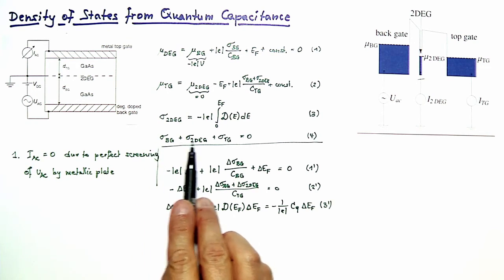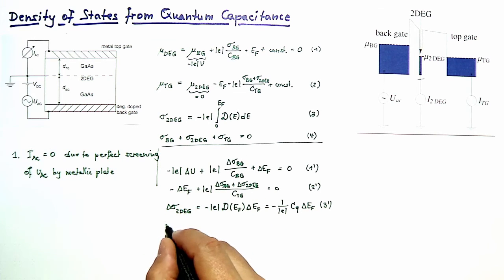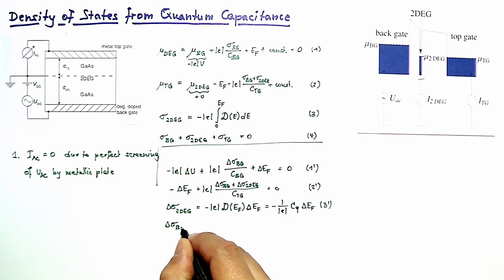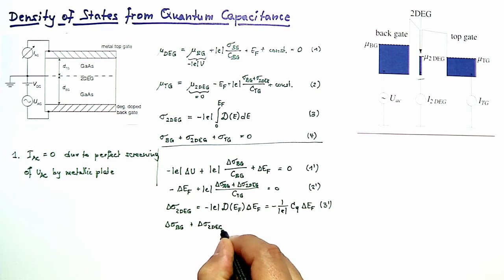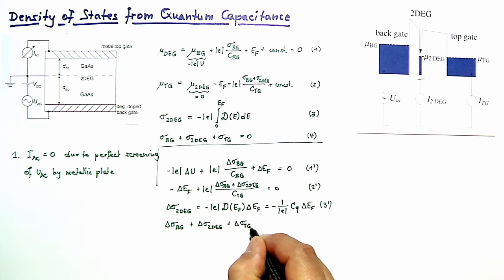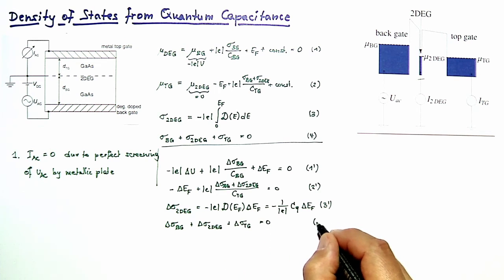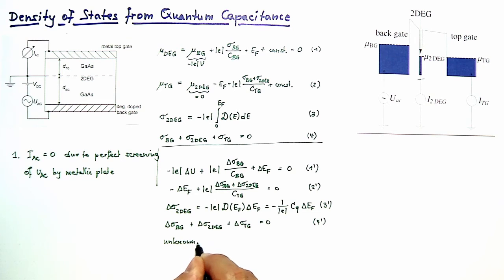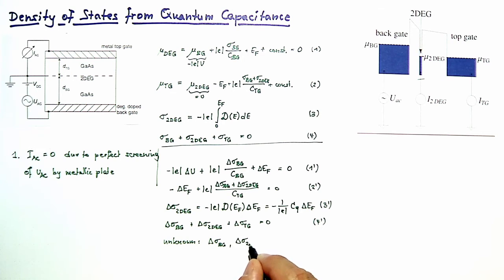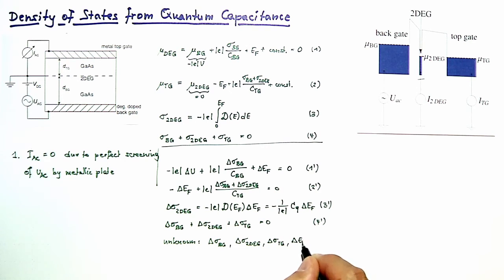The differential form of Equation 4 is also straightforward: delta_sigma_backgate plus delta_sigma_2DEG plus delta_sigma_topgate equals zero. This is Equation 4 prime. Now these four differential equations can be used to work out the unknowns: delta_sigma_backgate, delta_sigma_2DEG, delta_sigma_topgate, and delta_E_Fermi.